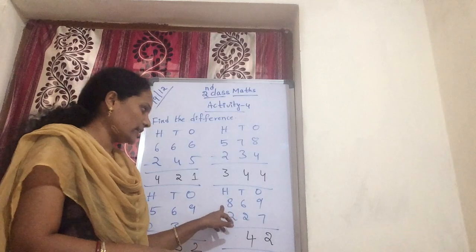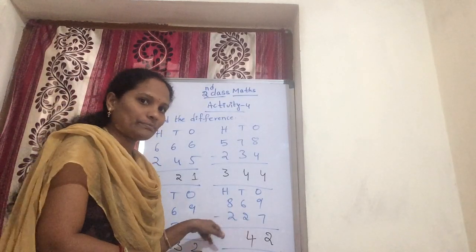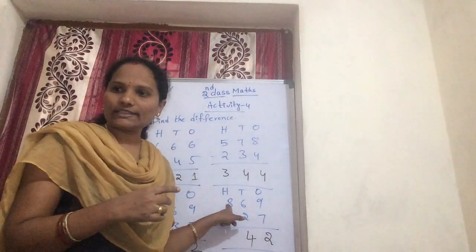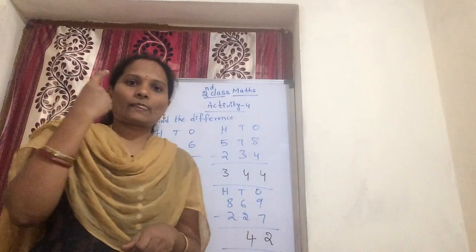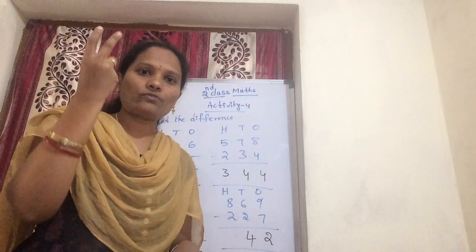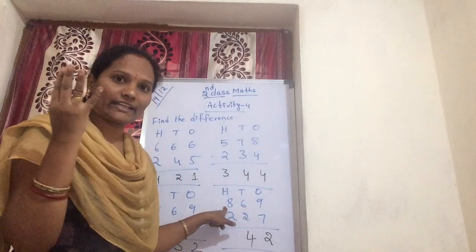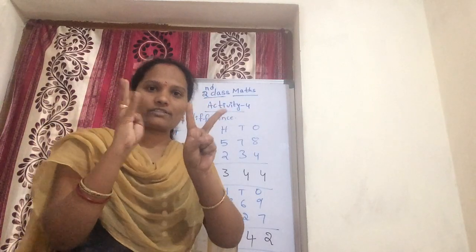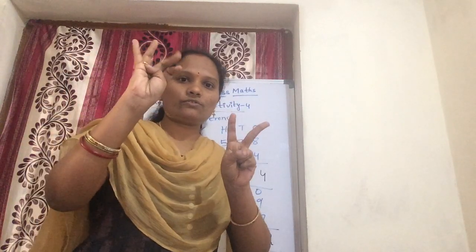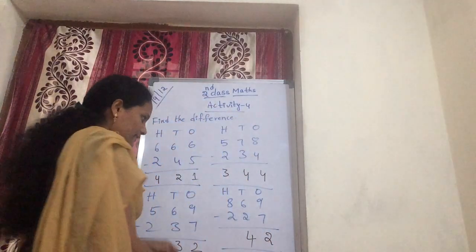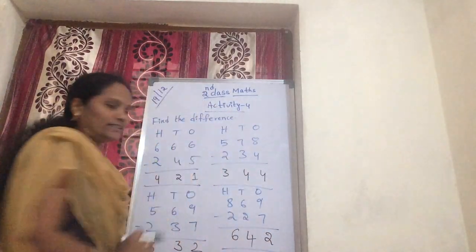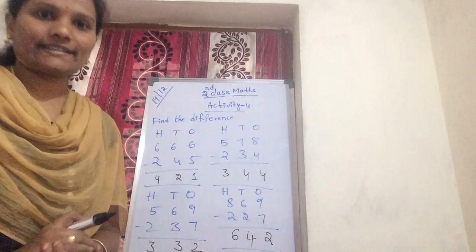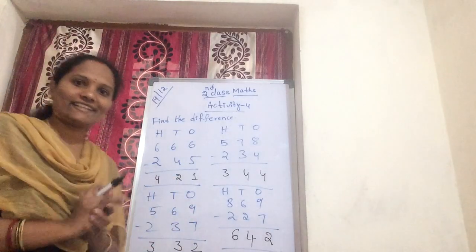Now next coming to hundreds: 5 minus 2. You are counting 2 after — 2 after 3, 4, 5, 6, 7, 8. Count how many fingers you get: 1, 2, 3, 4, 5, 6 fingers. Write 6 in hundreds. So what is our number? You get 642. You can understand these 2 methods.